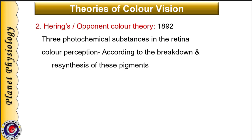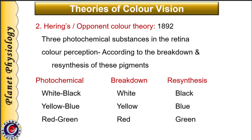The second theory of color vision was put forth by Hering and is known as Hering's theory, or opponent color theory. According to this theory, the retina contains three photochemical substances, and color perception depends on the breakdown and resynthesis of these pigments. For example, breakdown of the white-black photochemical gives sensation of white, while its resynthesis gives sensation of black. Similarly, breakdown of the yellow-blue photochemical gives yellow, and resynthesis gives blue. The red-green photochemical gives red on breakdown and green on resynthesis. This theory cannot explain perception of various shades or color vision abnormalities, and hence was not accepted.